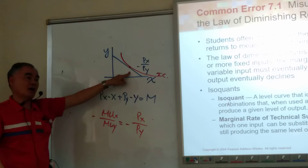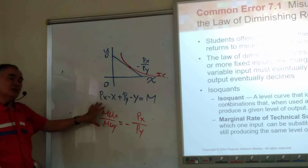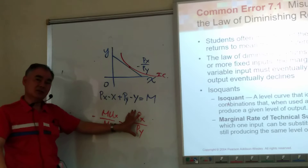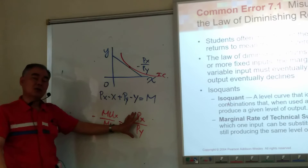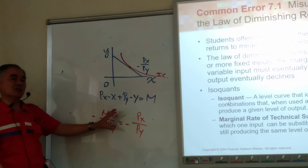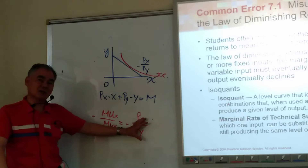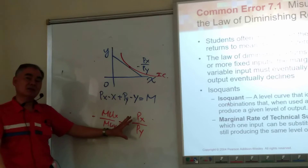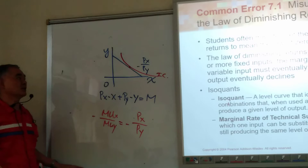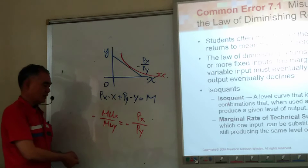We need the preference — the preference is the indifference curve. The slope of the indifference curve is MUx over MUy. When the budget line is tangent to the indifference curve, this is the point where the consumer maximizes utility. Why? Because this is the price in the consumer's mind, and this is the price in the market. When the price in their mind is the same as the market price, there is no need for any adjustment.